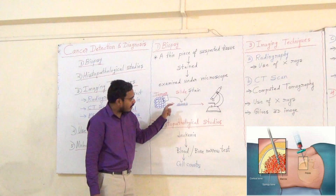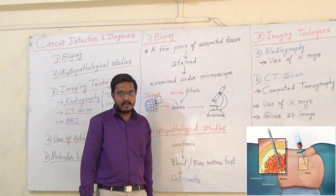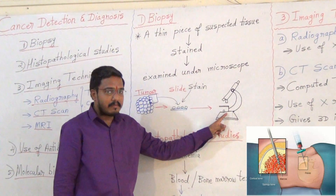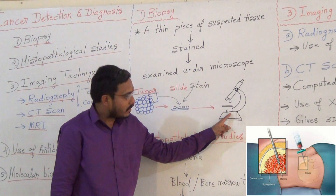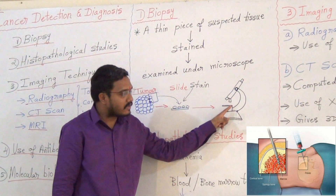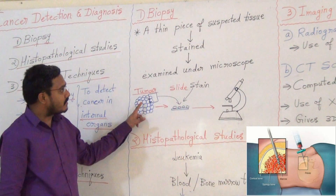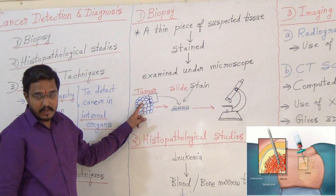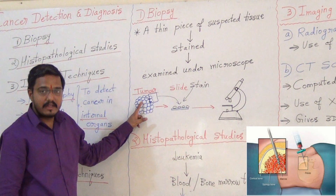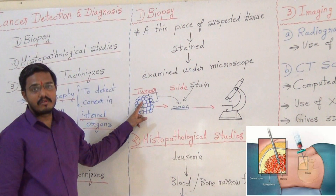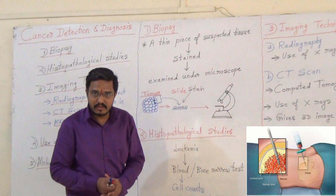The stain is added, and now this stained slide is studied under the microscope. They mainly search for cancer cells. If they find that any cancer cells are present in these slides, then the report says this is a tumor. If they do not find any cancer cells while studying under the microscope, then this is not a tumor — this is not cancer.